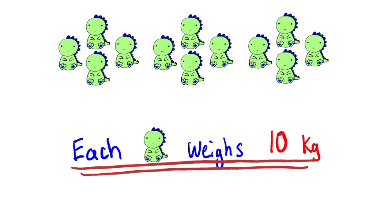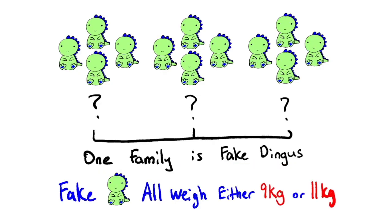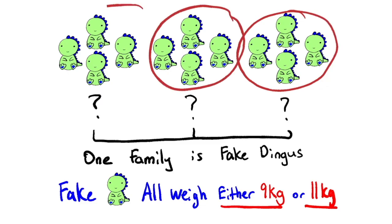However, one family is fake Dingus. And in this fake Dingus family, all the dinosaurs weigh either 9 kilograms or 11 kilograms. So four of these dinosaurs, we don't know which four, but four of them all weigh 9 kilograms or they all weigh 11 kilograms.